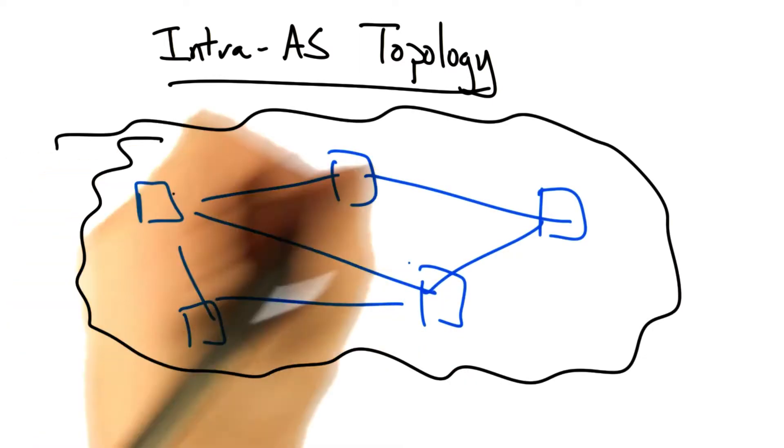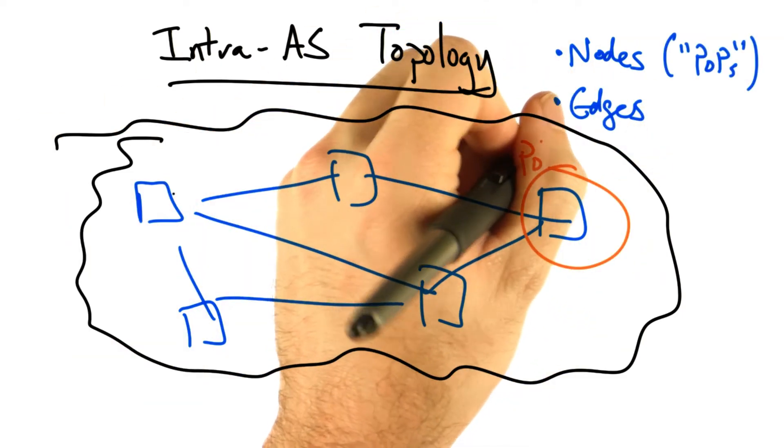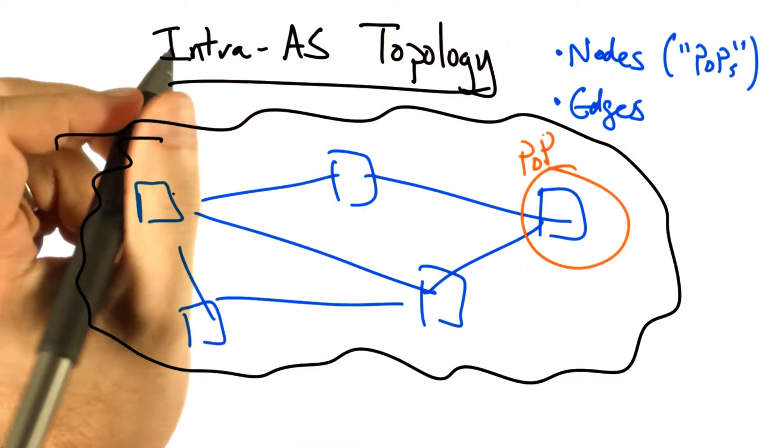The topology inside an AS consists of nodes and edges that connect them. The nodes are sometimes called points of presence, or POPs.